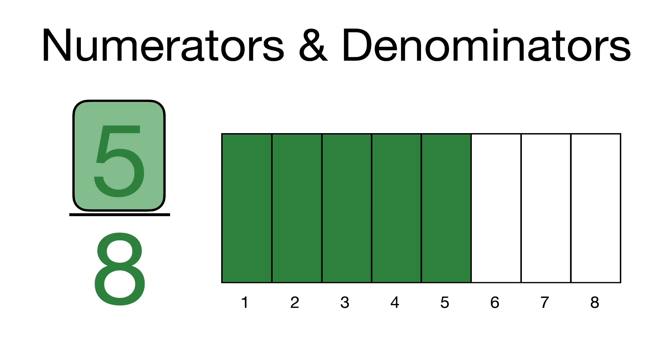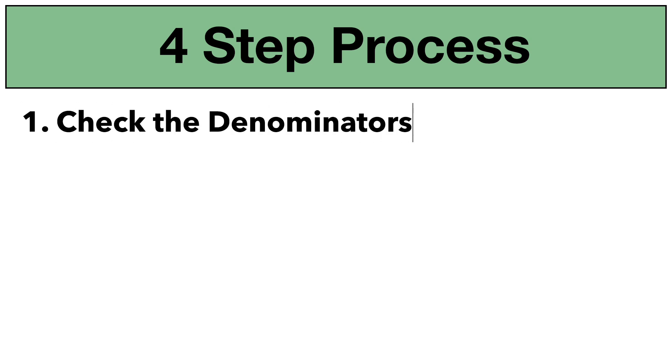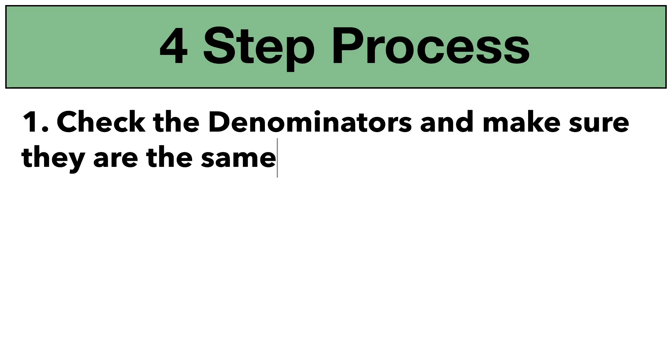That is what the numerator and denominator represent in fractions. Now let's learn how to add them when the denominators are like — which just means they're the same denominator. We're going to do this in a four-step process. The first step is you're going to check the denominators and make sure that they are actually the same.